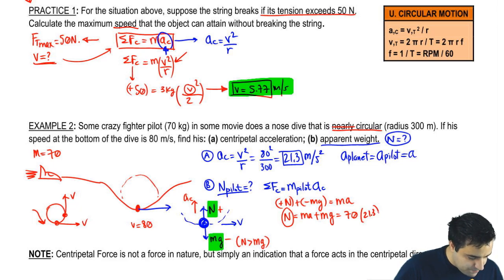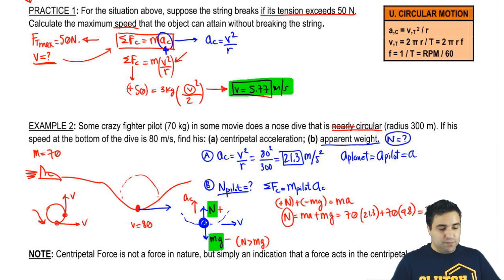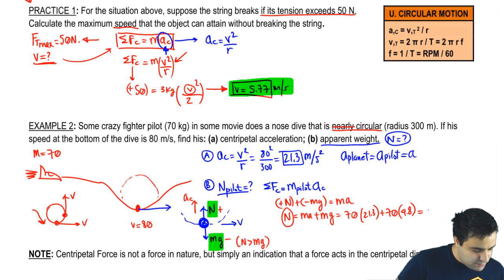So it's 70, A is 21.3, 70, G is 9.8. And you do this, you plug this all together, and the answer is 2180 newtons is his normal force.